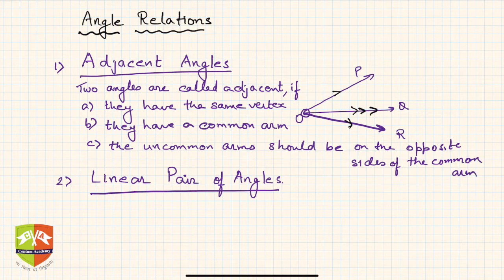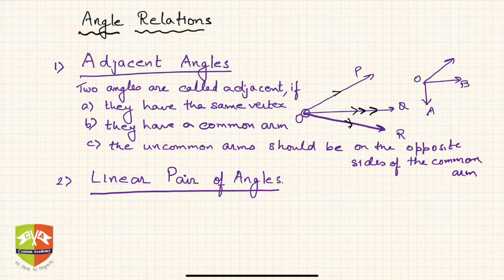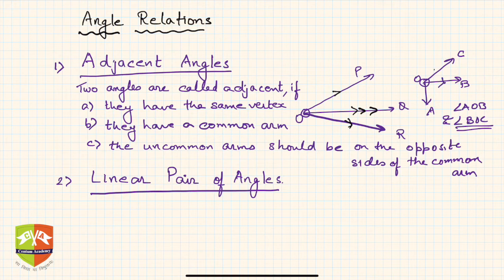For example, angle AOB and angle BOC are adjacent angles because they have a common vertex O, OB is the common arm, and OC and OA are on opposite sides of OB.